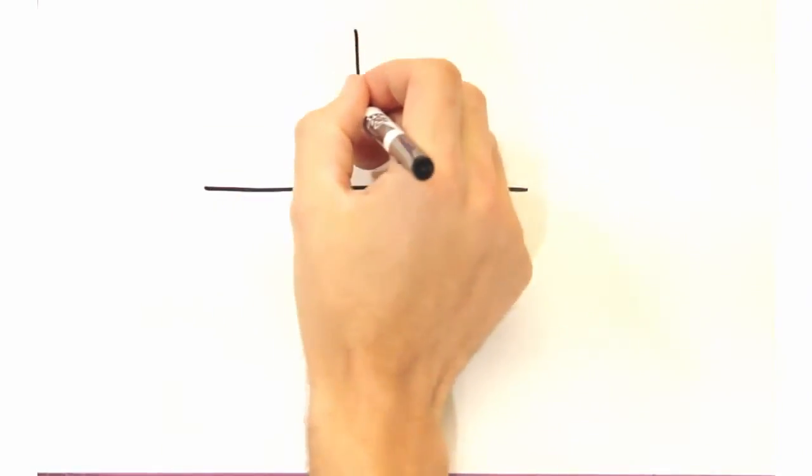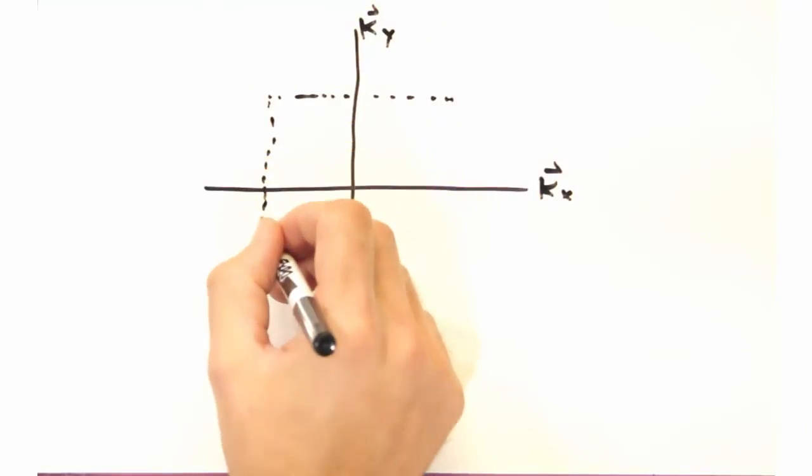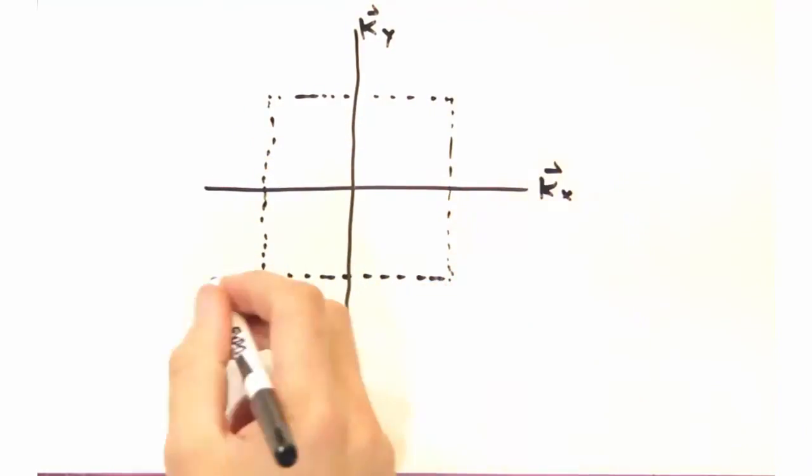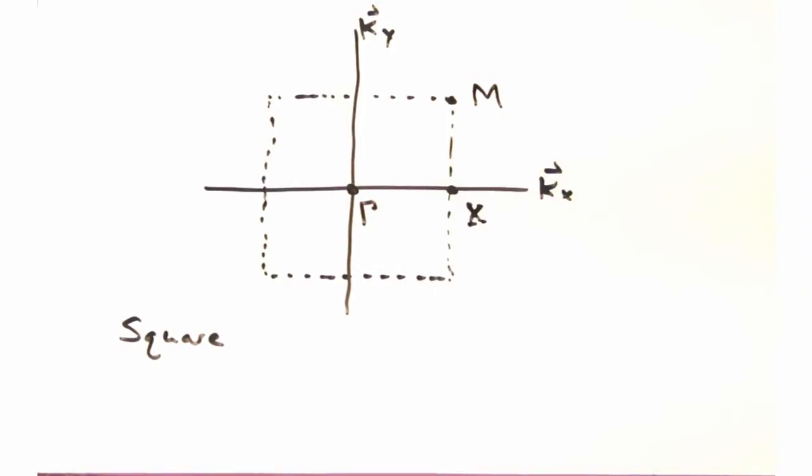There is, but we're going to need to introduce some vocabulary first in labeling our first Brillouin zone. For a square lattice, we're going to have a square Brillouin zone with our axis of Kx and Ky as so. Gamma's our origin at Kx, Ky equals 0, X is at the right edge, and M is at the corner.